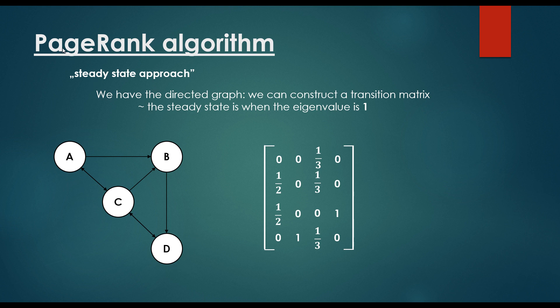Okay, but we have another approach, basically we have two more approaches, the steady-state approach, where we have the directed graph, we can construct the transition matrix, this is the transition matrix, and the steady-state is when the eigenvalue is equals to 1.